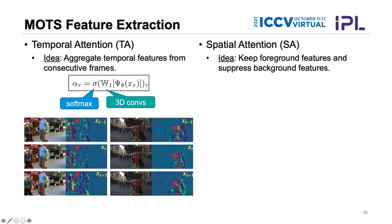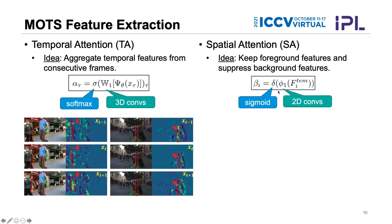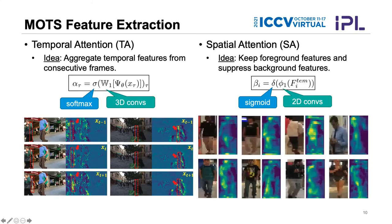The spatial attention idea is to keep foreground features and suppress background features. The formula shows that we take feature map f from the backbone network, pass it through several 2D convolutions and a sigmoid function to produce weights between zero and one, applied within each bounding box. The spatial attention maps shown here demonstrate that our method can distinguish foreground from background within each detection bounding box.